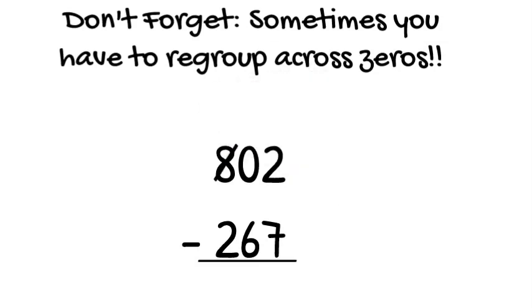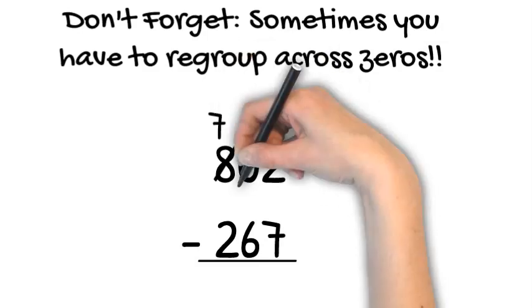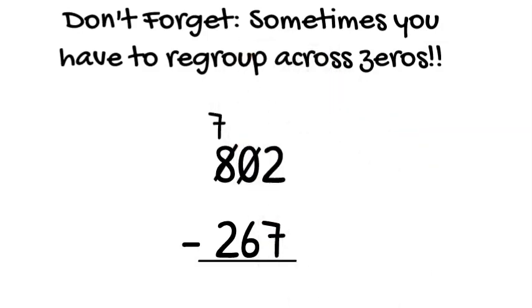So Mr. Tens goes on to Mrs. Hundreds' house, knocks on her door, says, Hey, Mrs. Hundreds, do you have any to spare? My neighbor really needs some, and so do I. Mrs. Hundreds said, Of course you can. I'll give you one. So we've crossed out her 8. 8 take away 1 is 7. We put our 7 on top, and we bring the 1 she gave us next door.